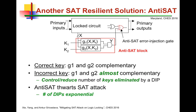These two blocks are complementary only when correct keys are applied to them. When the correct keys are applied, these two blocks are complementary, and when the two complementary blocks are AND'd together, they produce a zero — which means they do not inject any error into the circuit, and the circuit operates correctly. But when wrong, incorrect keys are applied to the anti-SAT block, then an error is produced by the anti-SAT block and injected into the circuit.